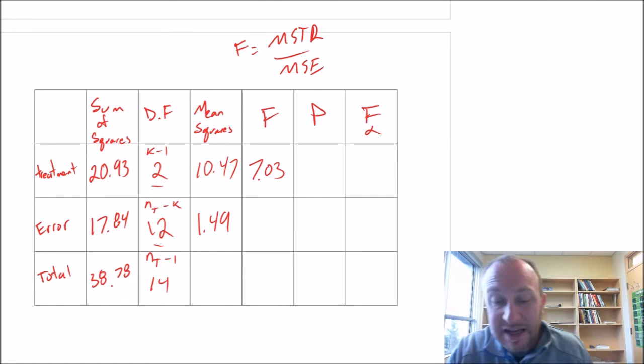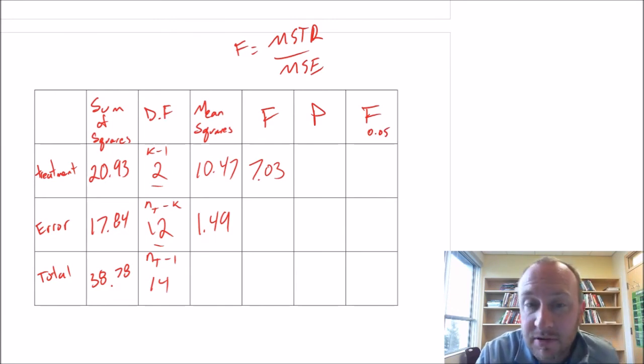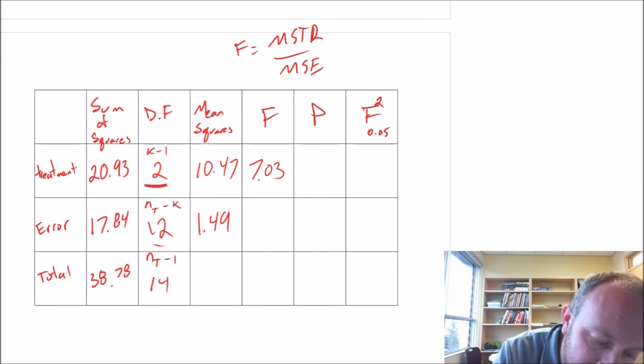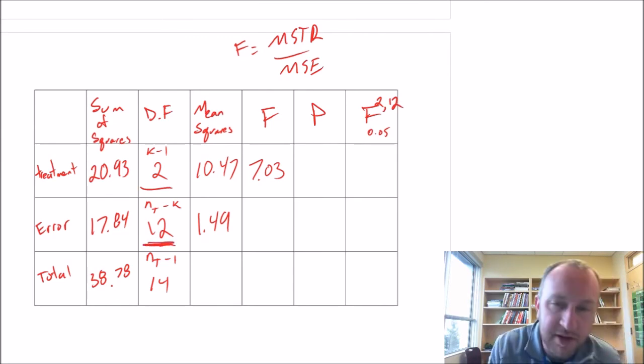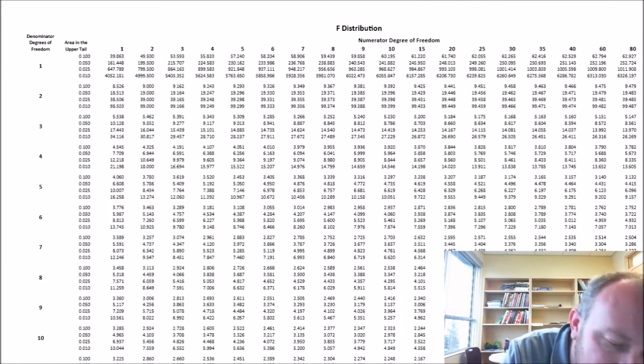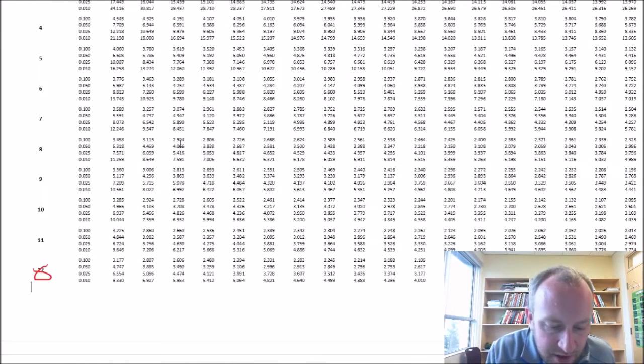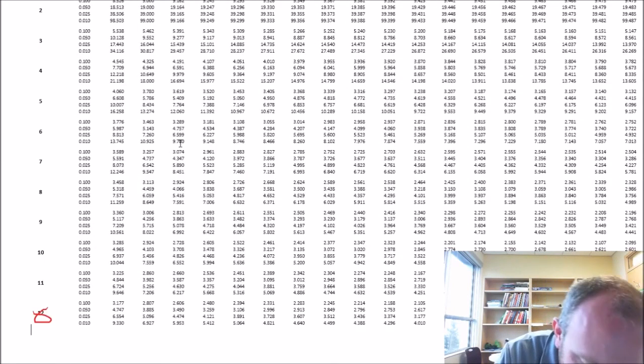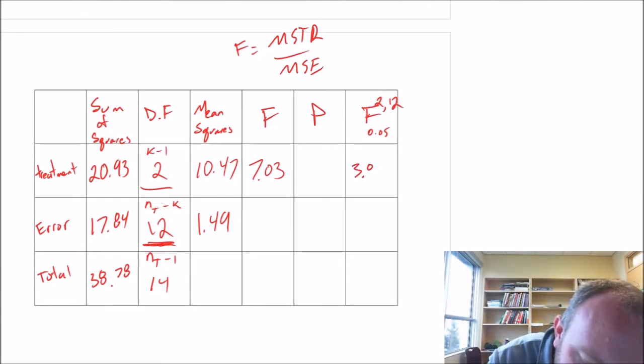Let's find our critical value first. So this will be alpha = 0.05, and this is from a distribution that has 2 degrees of freedom in the numerator - 2 degrees of freedom on treatment - and 12 degrees of freedom in the denominator. Now if we go to our F tables, I want 2 degrees of freedom in the numerator and 12 degrees of freedom in the denominator. So there's 0.05, so that corresponds to a critical value of 3.885.